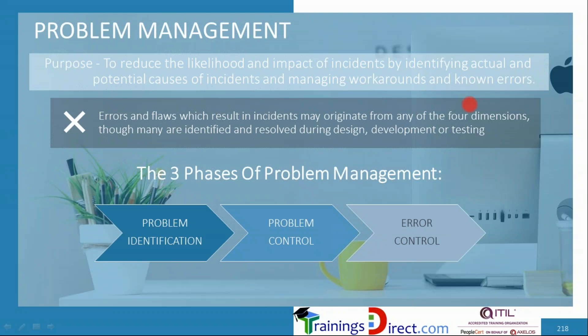Problem management also analyzes known errors. Errors and flaws may result in incidents which may originate from any of the four dimensions. Sometimes people make a mistake and an incident occurs — somebody accidentally deleting a database may lead to a major incident. Sometimes systems misbehave. Even though errors are identified and resolved during design, development, and testing, there is always some propagation of certain errors that eventually show up in the live environment.